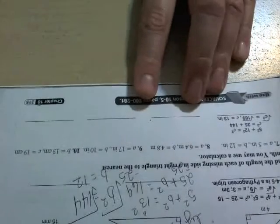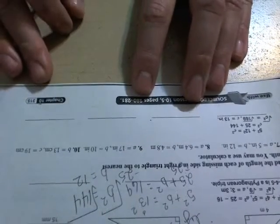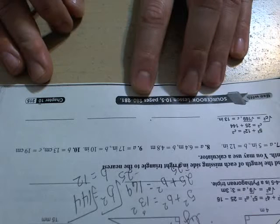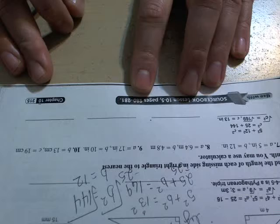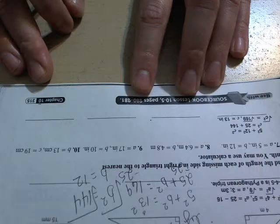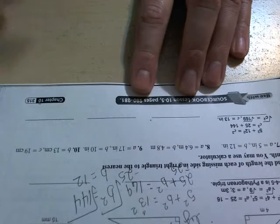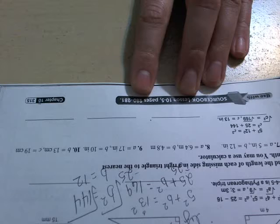Bottom of the page, doing the same thing we just did, except instead of having drawn a triangle, they're just giving you the different parts of the formula. They're telling us in number 8 that A is 6.4 and B is 4.8. So I'm going to change A to 6.4 in the formula, B to 4.8 in the formula, and solve.